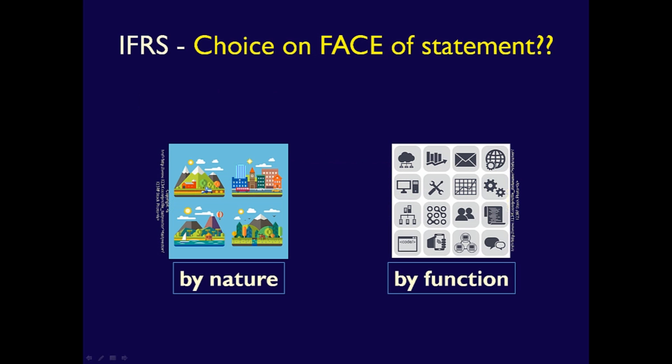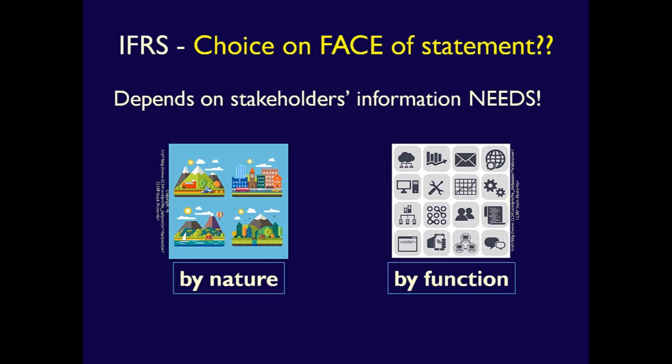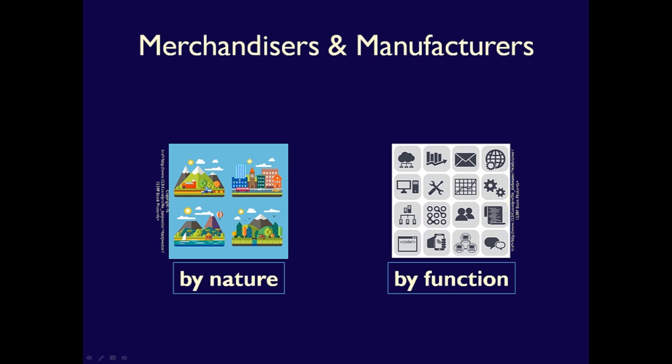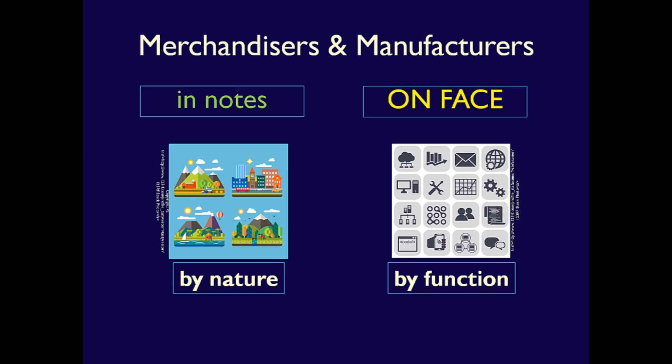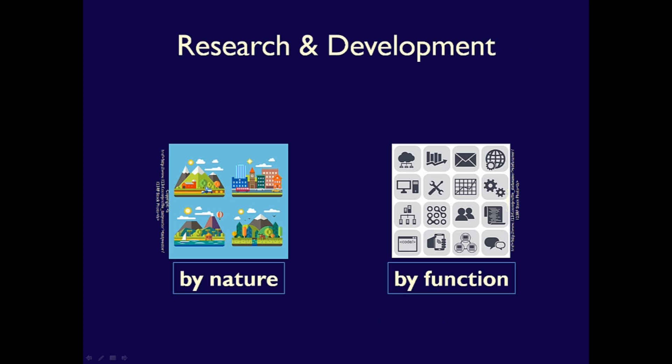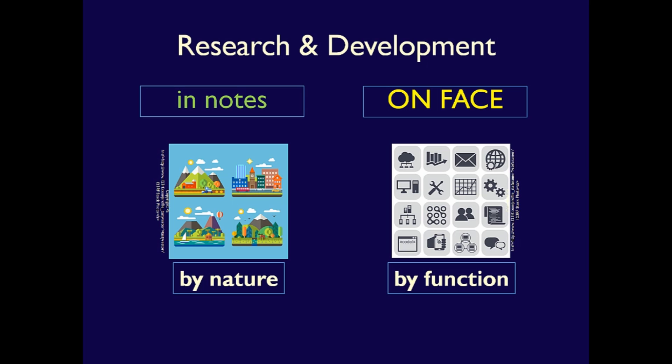So which method is better for the stakeholders? It depends on what the stakeholders need to make an informed decision. For instance, a retailer such as Walmart reports by function on the face of their income statement because, for manufacturers, wholesalers and retailers, the focus is on cost of goods sold and gross profit. Analysis of gross profit provides important information with regards to inventory prices and costs. Pfizer Inc. reports by function because they have huge expenses related to research and development. If Pfizer reported by nature, those costs would be largely hidden within the employee benefit costs, since a large portion of research and development costs are attributed to payroll costs.